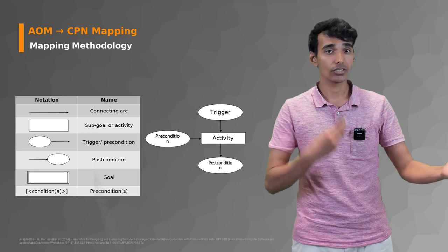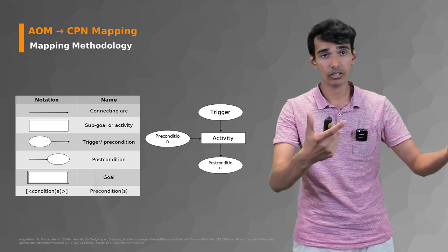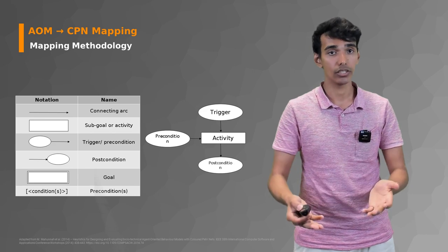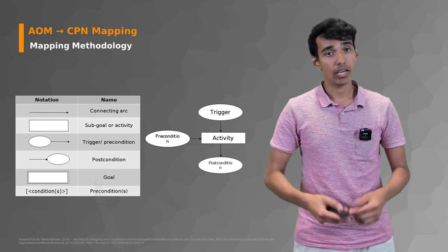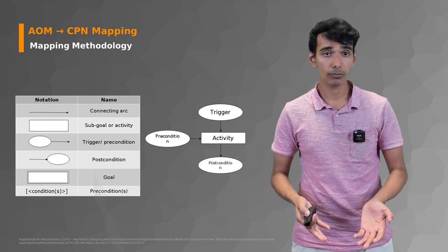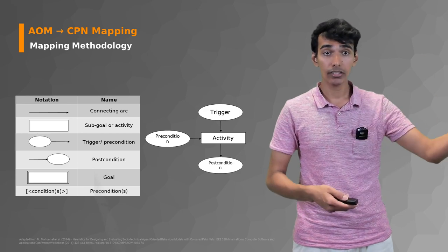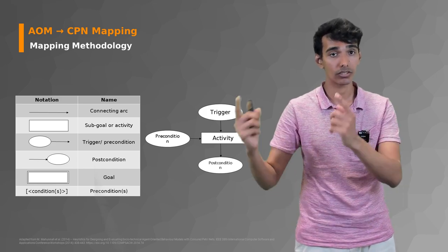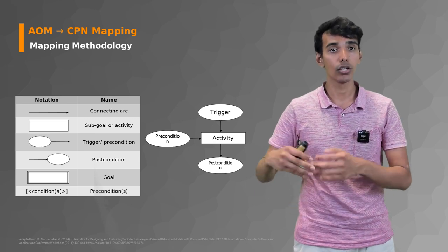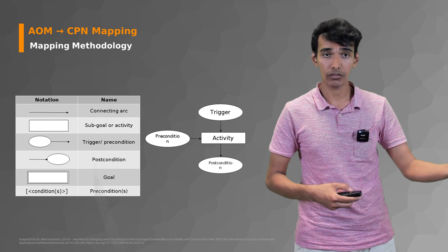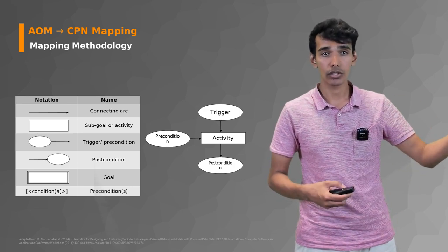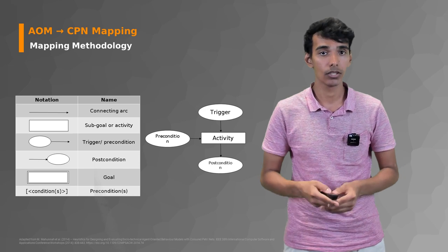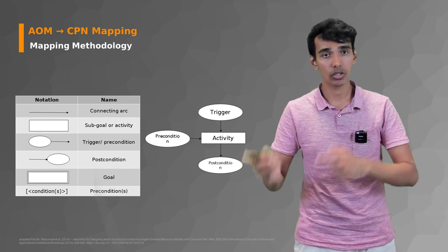If you have a goal model and the associated behavioral interface model, you may have a sub-goal or an activity, which are identical. When you map this towards a CPN model, you're going to have a transition and these places. When you have a trigger or a precondition in your behavioral interface model, these can be mapped using a place with an outgoing arc. A transition will only fire if your place has a token that is valid with all the guards, so this is how you can map a precondition or a trigger.